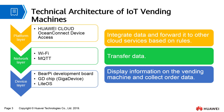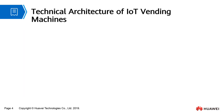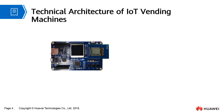The network layer is responsible for data transmission, and the device layer is responsible for man-machine interaction and data generation. The man-machine interaction for the vending machine is achieved by the BarePi development board, which is connected to a PC by using a USB cable.